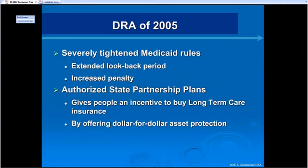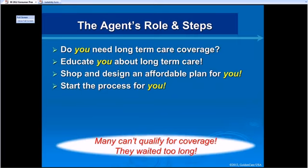What the Deficit Reduction Act did give us is partnership plans. It tightened up Medicaid hard and increased penalties, but then said: if you live in a state with partnership plans — and Minnesota does — if you buy a long-term care policy, we'll give you a dollar-for-dollar asset protection. Normally, if you don't have long-term care insurance and go into a nursing home, you'd have to spend down all your assets to $3,000. But if you buy a policy, whatever dollar amount it pays, you get to keep that on top. So a $100,000 policy lets you keep $102,000.